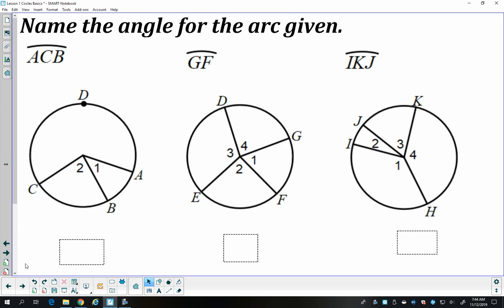We can also name the angle associated with an arc. So here I have arc ACB. Let's start at A, go towards C, so I'm going to go this way and end at B. So that's this arc. And the angle associated with that is angle 1.